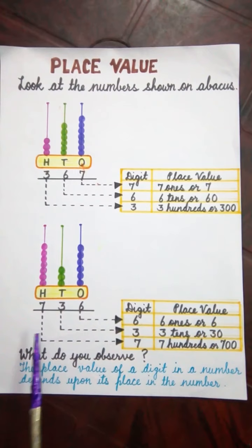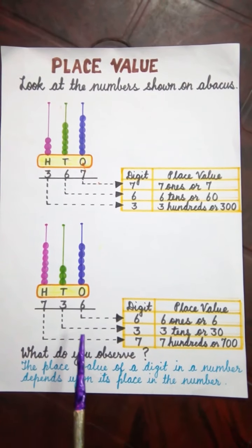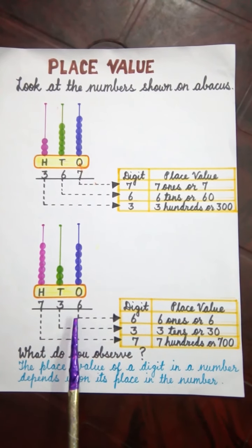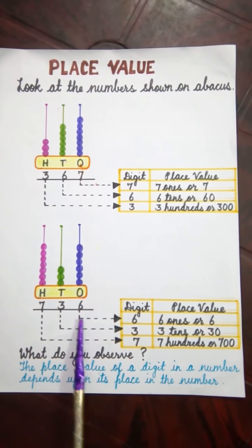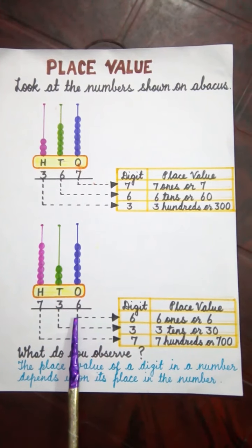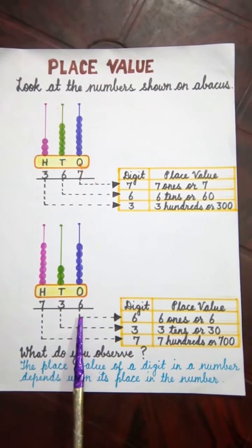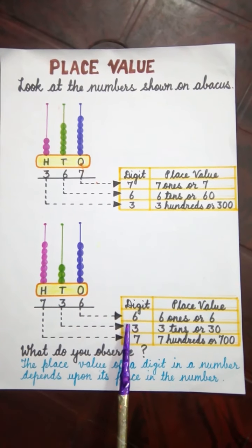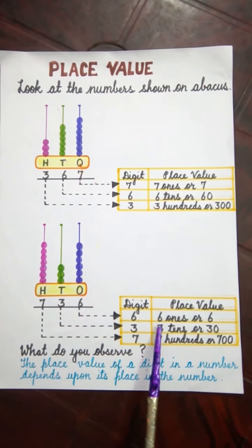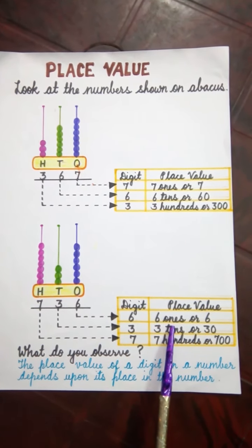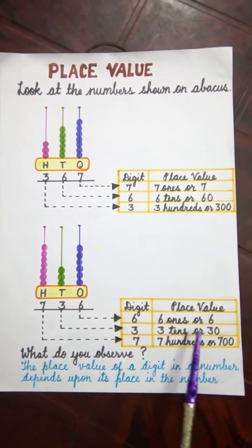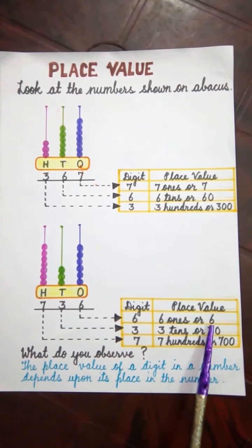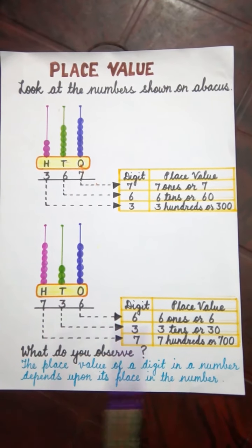Now what is the place value of these digits? The place value of 6 — as 6 is in the 1's place — so the place value of 6 is 6 ones. Or we can say 6 multiplied by 1 is equal to 6.